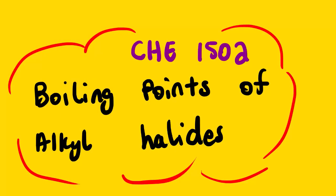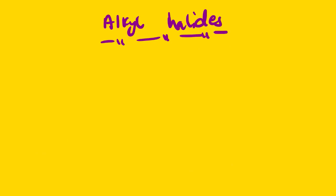Our lesson for today will be looking at Chemistry 1502 — the boiling points of alkyl halides, under the properties of alkyl halides. We'll also start the introduction of nucleophilic substitution reactions. We know what an alkyl halide is and the different types of alkyl halides. In this lesson, we are going to introduce how to determine the boiling point using the same alkyl group.